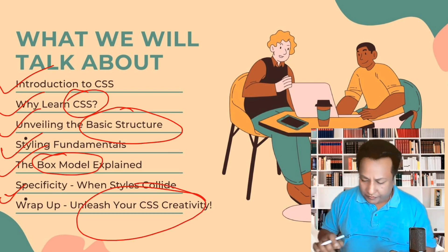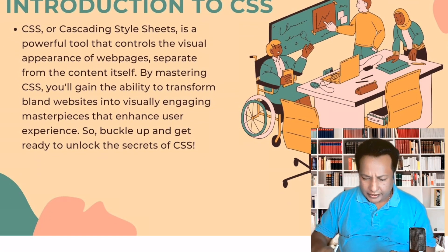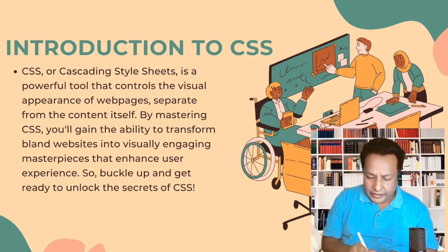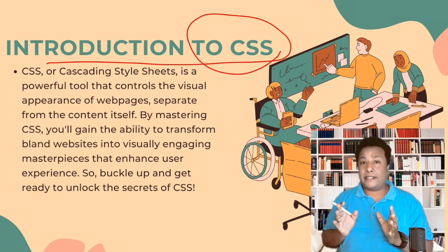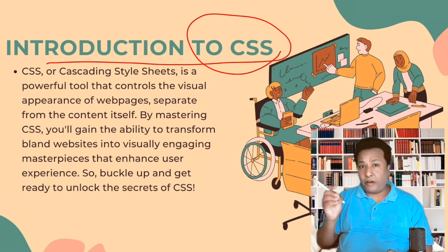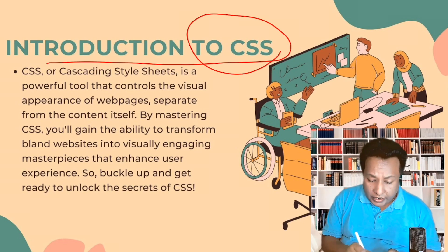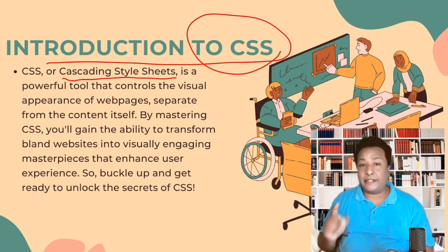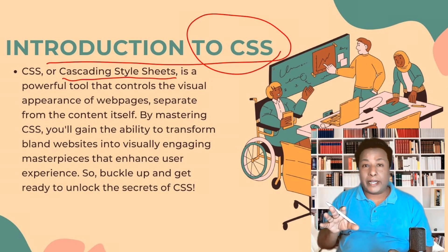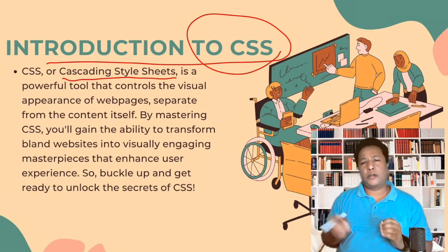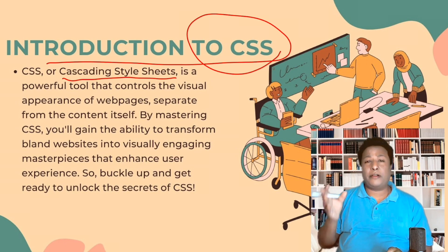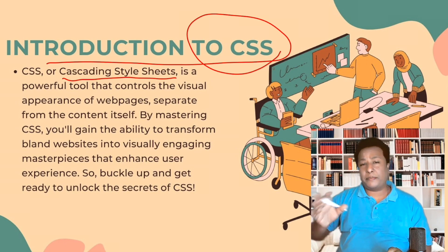Now let us understand what CSS is. The full form of CSS is Cascading Style Sheets. Before CSS, we need to understand: on the internet, any page you visit — like google.com, gmail.com, or yahoo.com — the website looks very pretty right now.